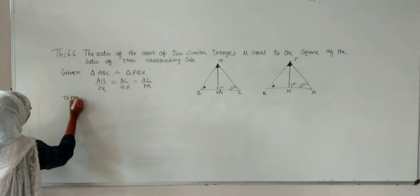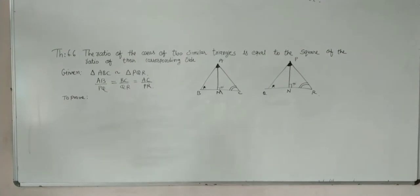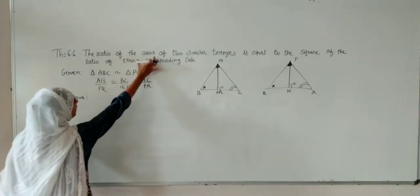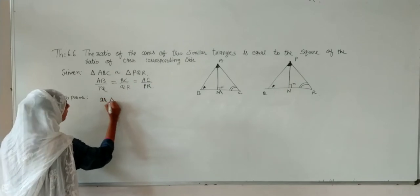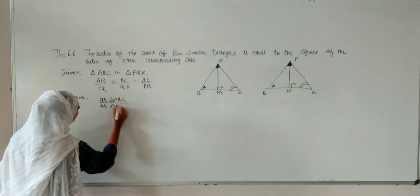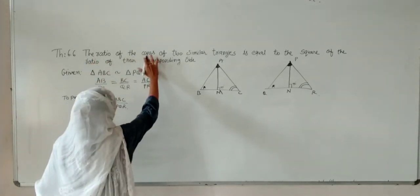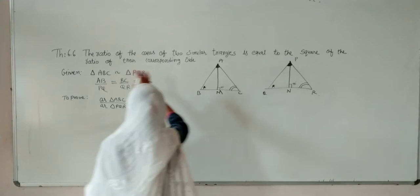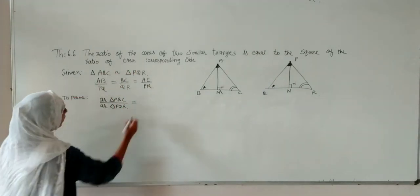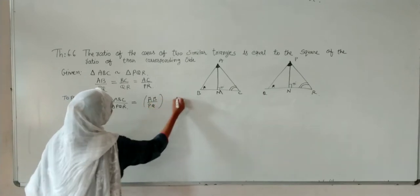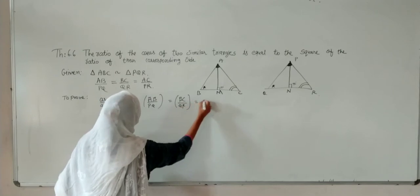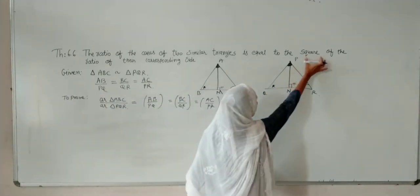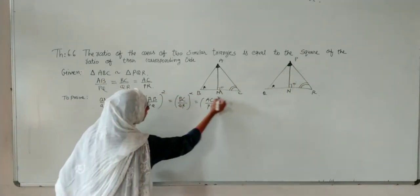Now we are talking about what we have to prove. Reading the question again: the ratios of the areas of two similar triangles — we have to take the ratio of areas of triangle ABC and triangle PQR. That ratio will be equal to the square of the ratio of corresponding sides. So what we have to prove is: Area(ABC) / Area(PQR) = (AB/PQ)² = (BC/QR)² = (AC/PR)². The new thing introduced here is the square — that is what we have to prove.